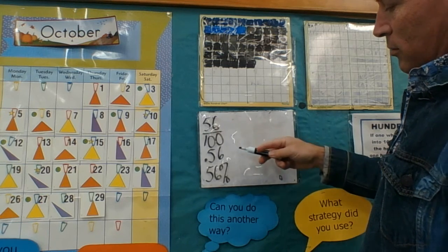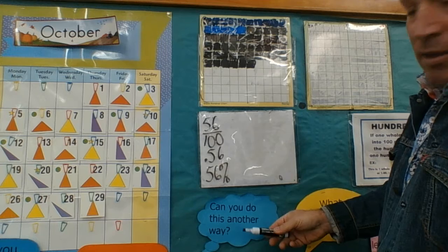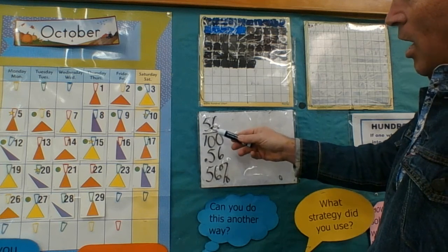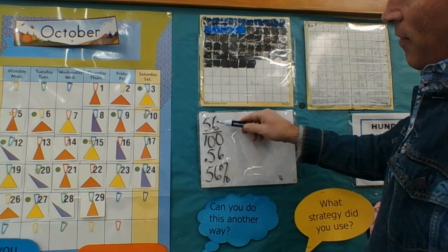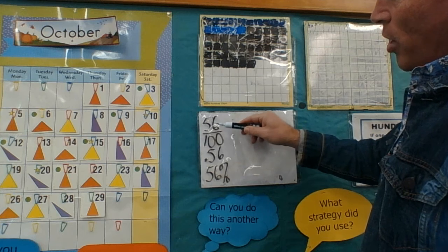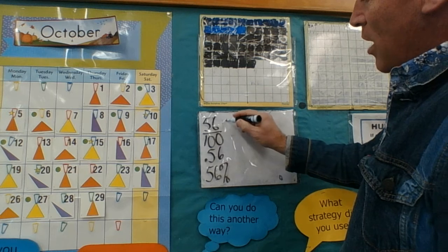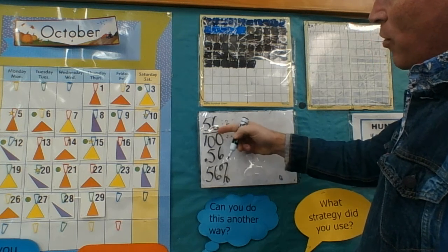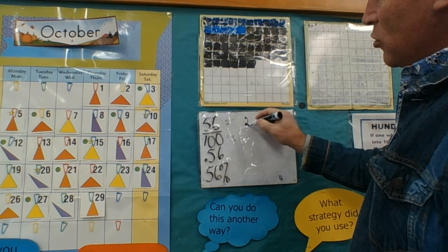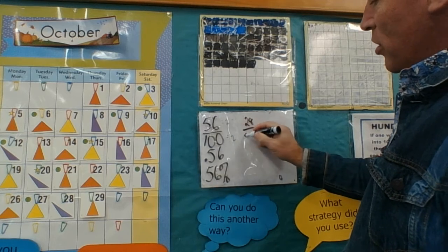And so I'm going to do it my way. Now you can do it a different way, but my way is I like to look at if the number on the numerator and the denominator, if they're both even, I just keep cutting them in half. So I'm going to divide by 2.